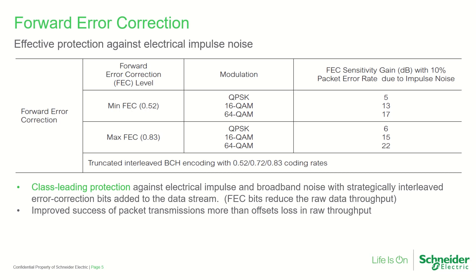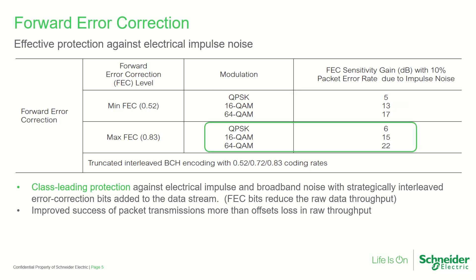When enabled, FEC can improve the reliability of data transmission when the receiving radio is subject to local interference. Improvements of between 5 and 17 decibels are possible when a low FEC level is implemented, or improvements of between 6 and 22 decibels are possible when the highest level of FEC is implemented.